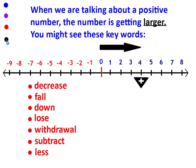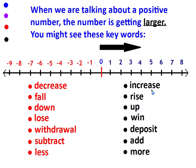When we're talking about a positive number, the number is getting larger and you might see these keywords: increase (if your score increases, it gets larger), rise (if the stock market rises, it goes up), up, win (if you win the lottery, it's something you get, it's a positive number), deposit (when you put money into your checking or savings account), add, and more.